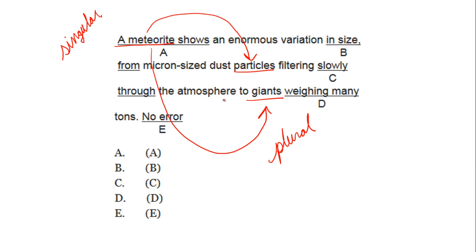The error in this sentence occurs at D. How do we revise it? We change 'a meteorite,' which is singular, to 'meteorites,' which is plural. Let's reread: 'Meteorites show an enormous variation in size from micron-sized dust particles filtering slowly through the atmosphere to giants weighing many tons.'